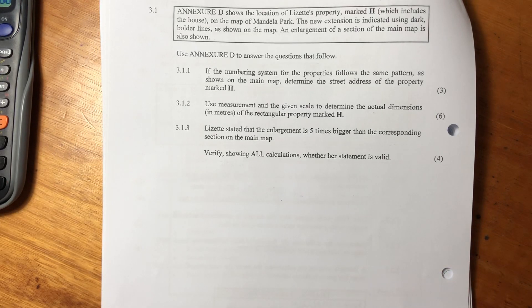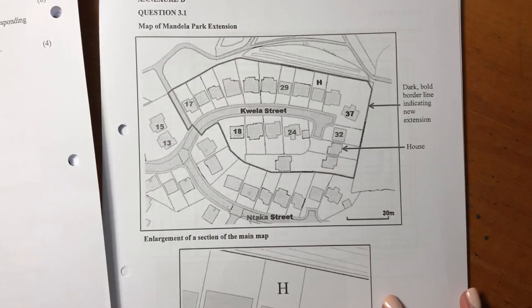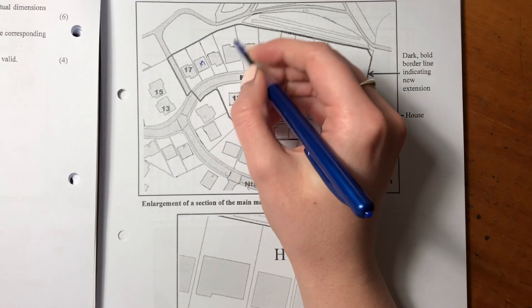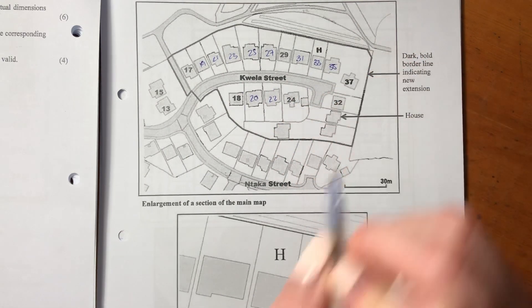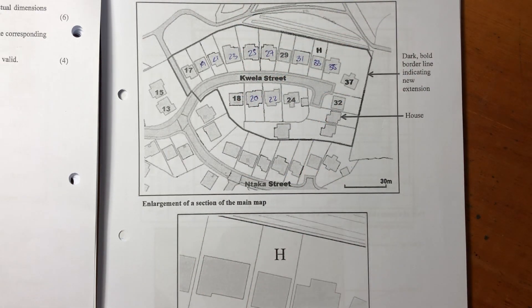It says if the numbering system for the properties follows the same pattern as shown on the main map, determine the street address of the property marked H. So let's see how we're going to figure this out. So we see you go 17, 18, right? So this will be 19, so it's basically alternating like this: 21, 22, 23, 24, 25, 26 will be somewhere here. This will be 27, 29, 31, so it's going up in twos but in odd numbers here: 33, 35, 37.